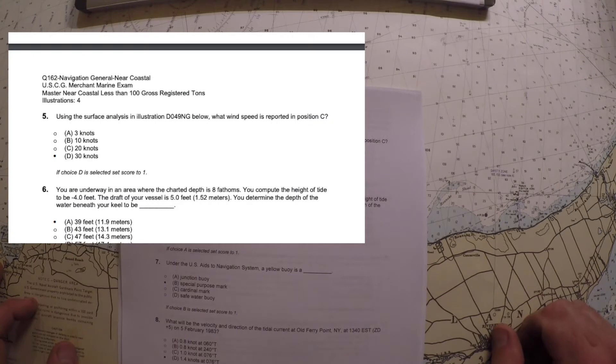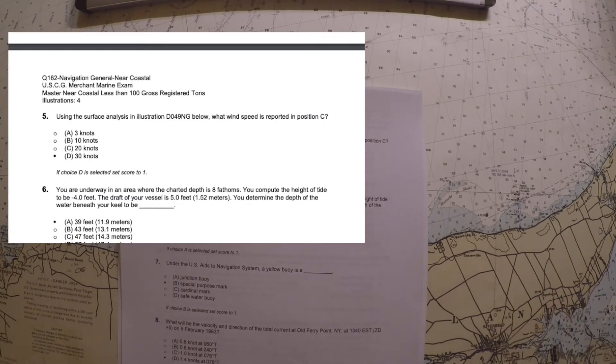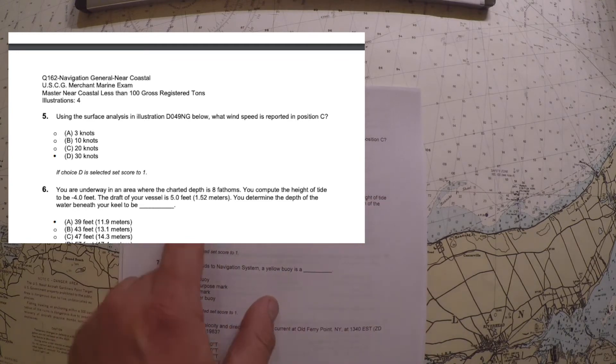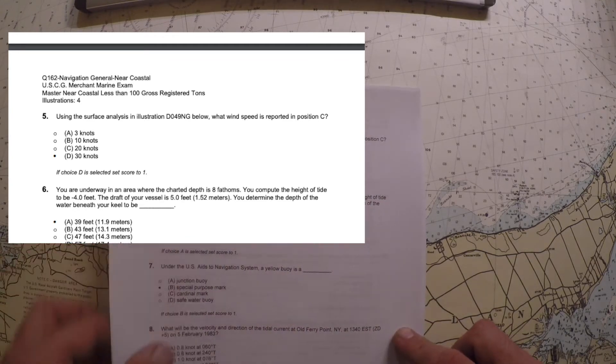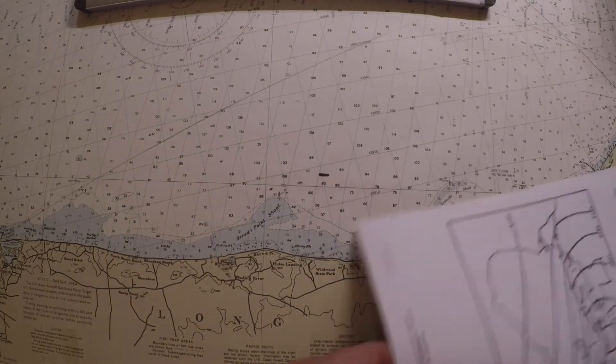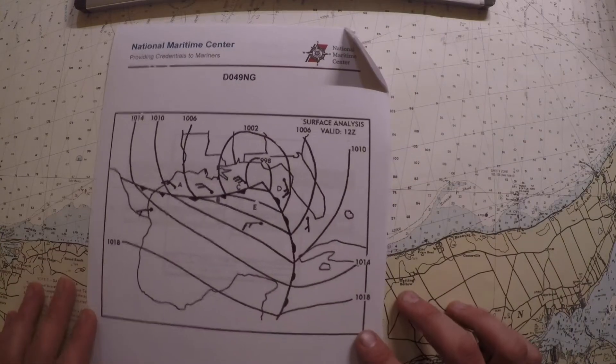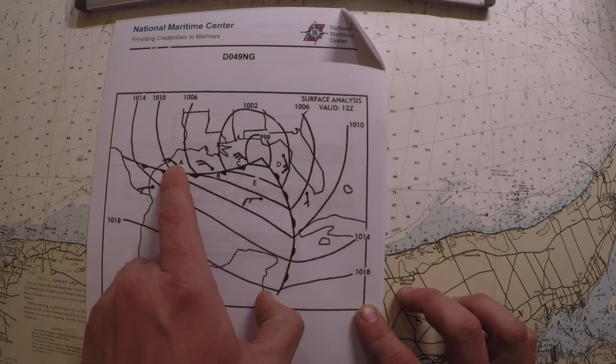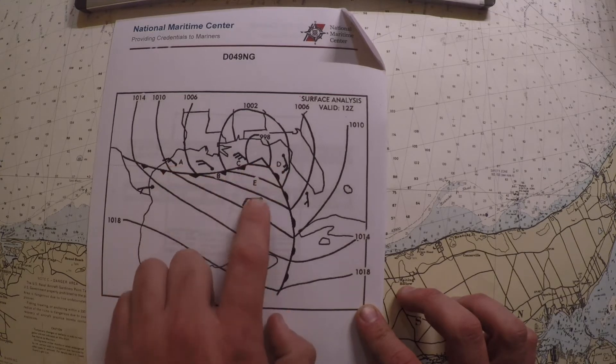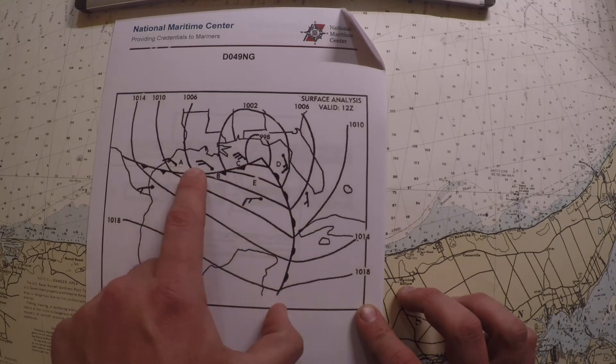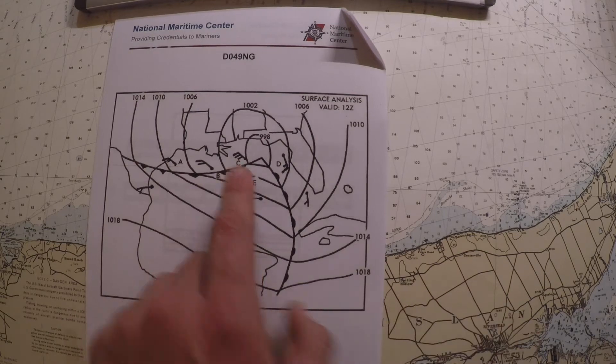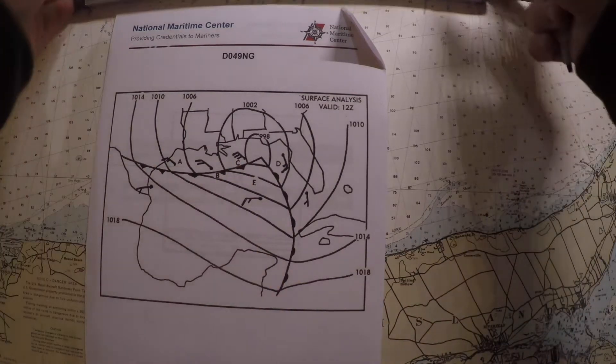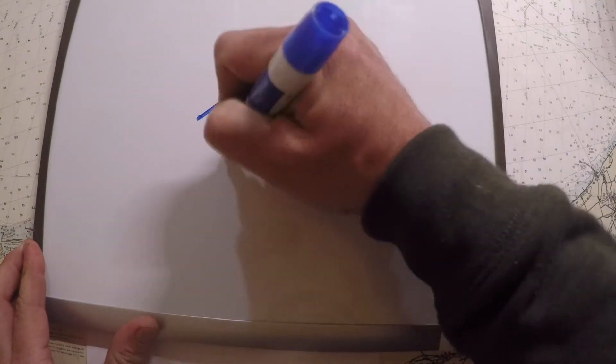For question number five, it says using the surface analysis in the illustration, what wind speed is reported at position Charlie? And it's just a bunch of wind speeds to choose from, so we need to look at the diagram that comes with the exam. And here's our picture, and they're asking for position Charlie. You can see choices A, B, C, D, and then there's a couple other choices as well. But in essence, they're asking us to interpret what does this wind barb symbol mean? I'll recreate it here. It's three barbs.